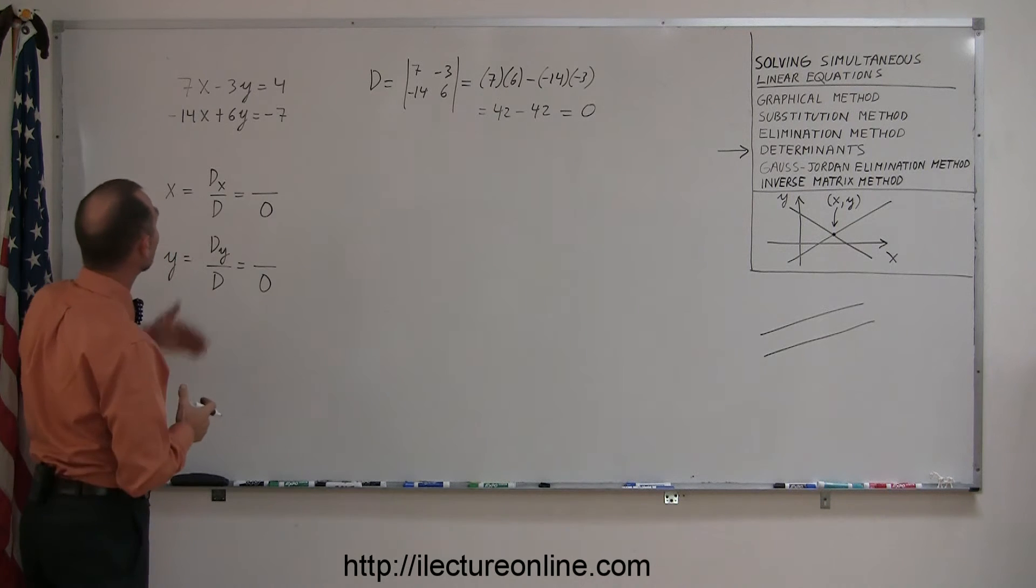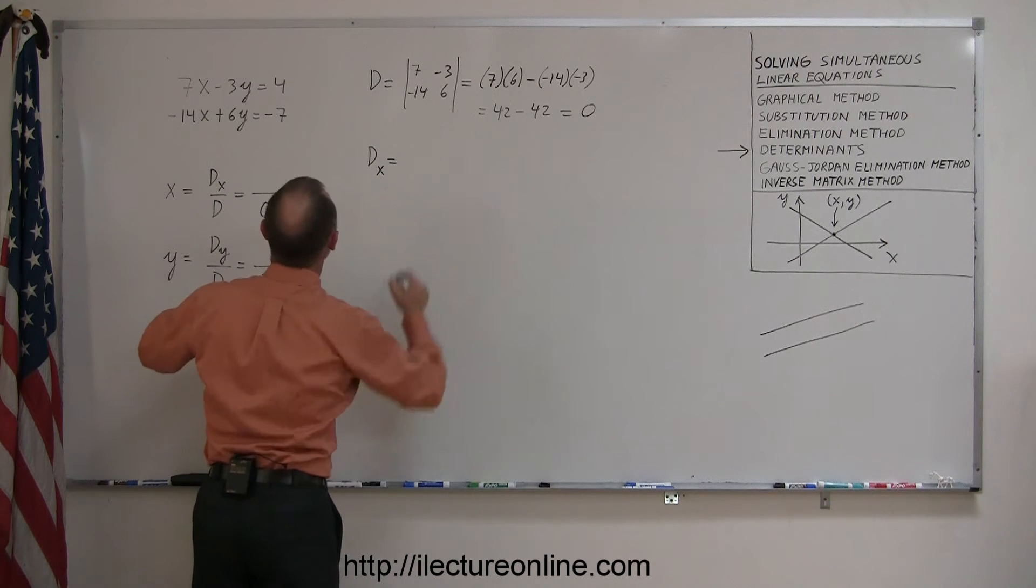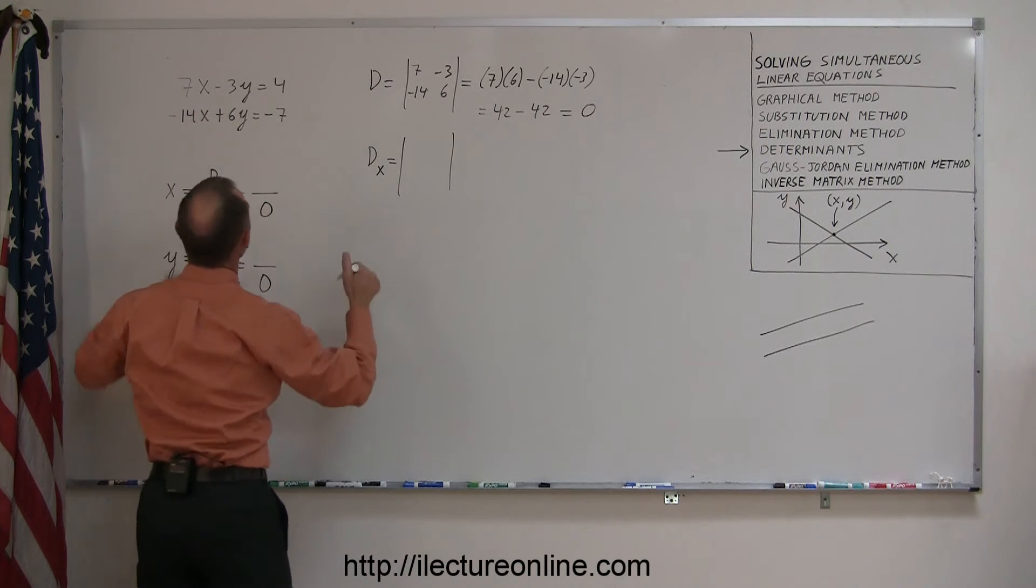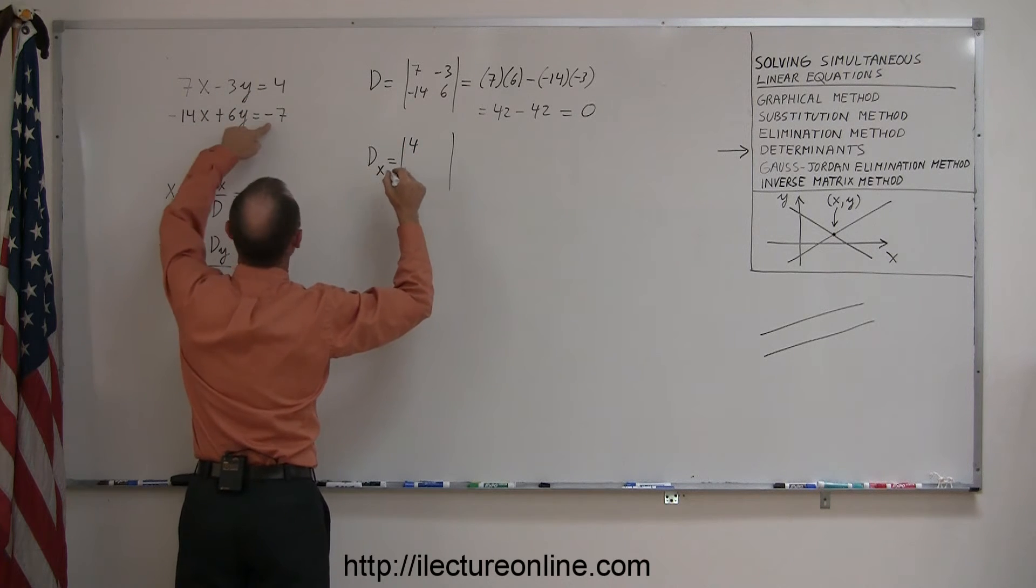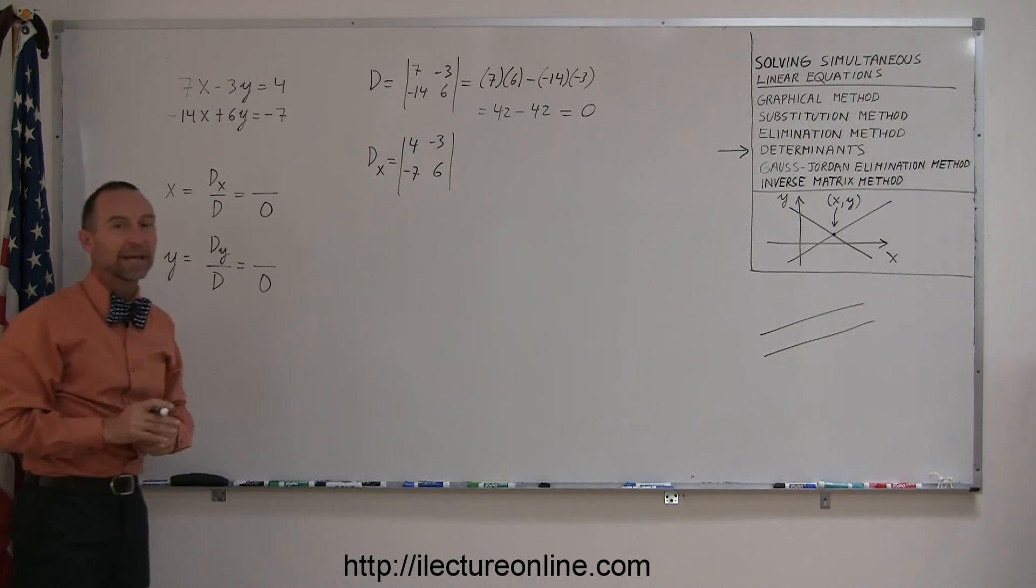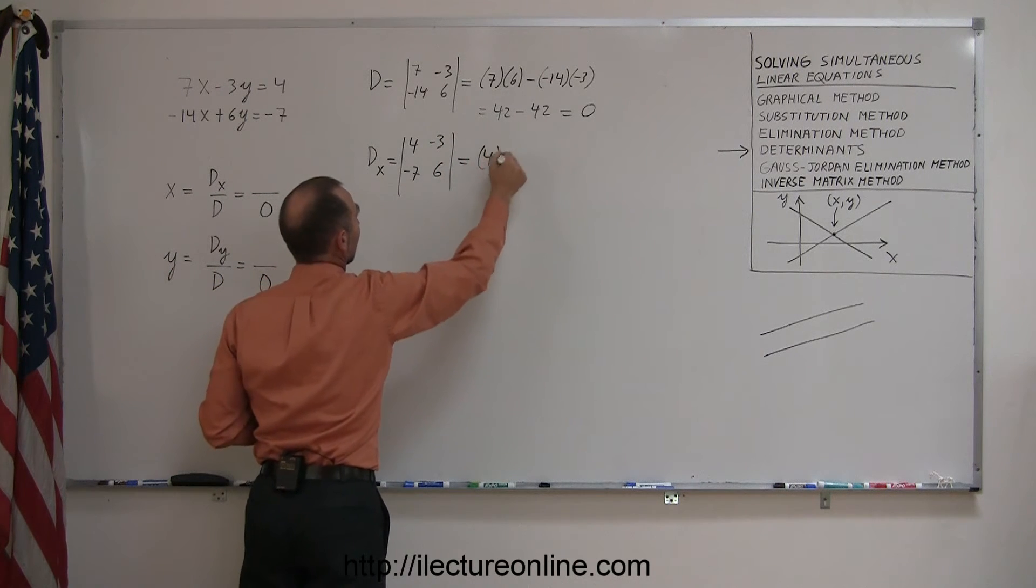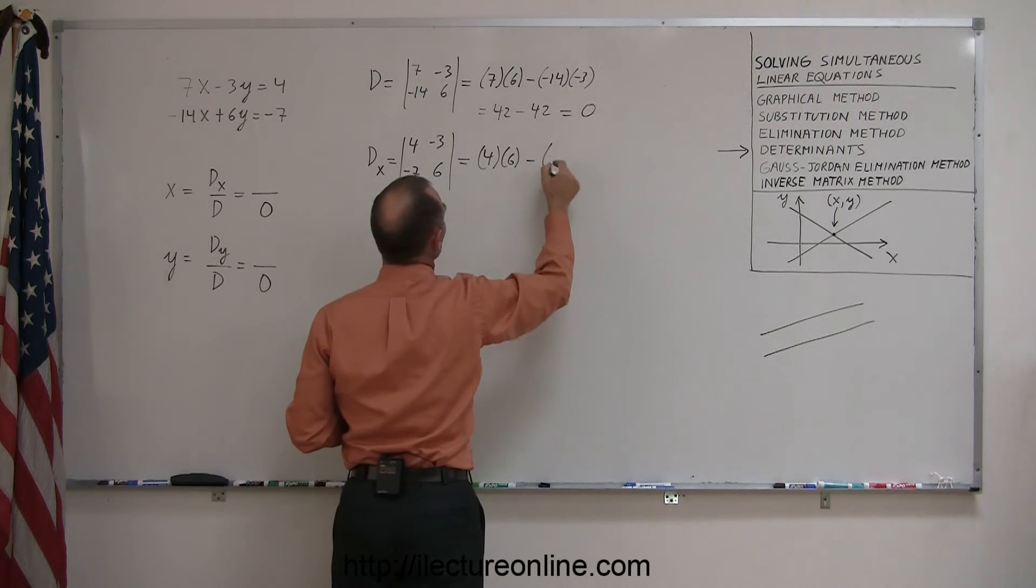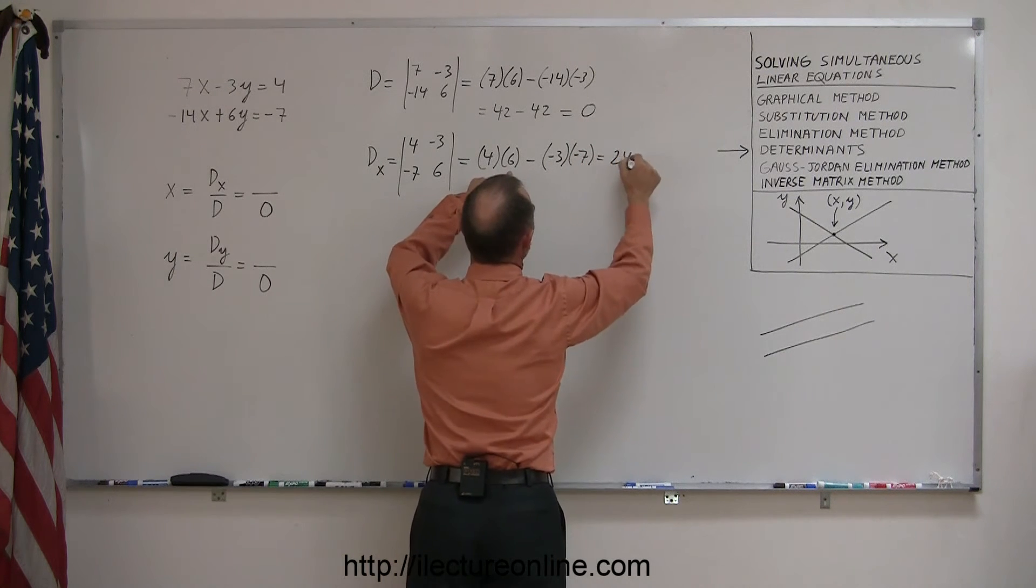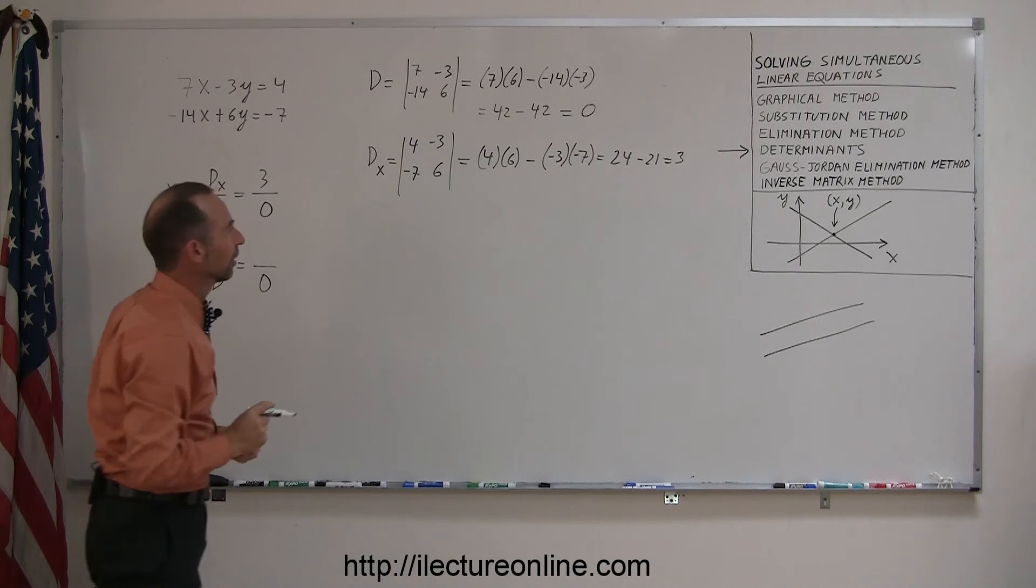But just to get a little bit more practice, I'm going to calculate the d sub x and the d sub y for these two equations. So the d sub x is equal to the very same determinant, but by taking the coefficients of the x variables and replacing them by the constants. So instead of 7, I write 4. Instead of negative 14, I write negative 7. The coefficients for the y variables stay the same, so the negative 3 and the 6 remain there. Now I'll work this out. 4 times 6 is 24, minus 21, which is 3.